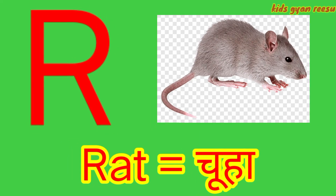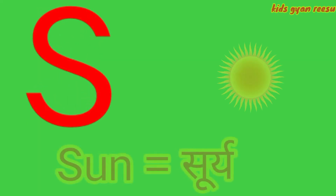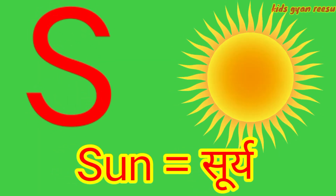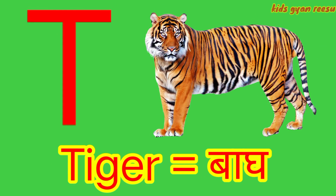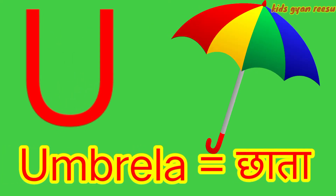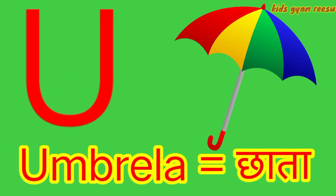R for rat, S for sun, T for tiger, U for umbrella.